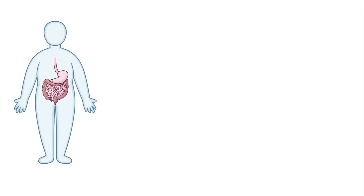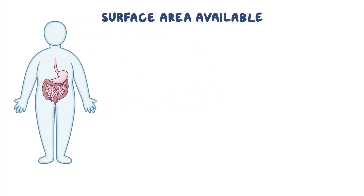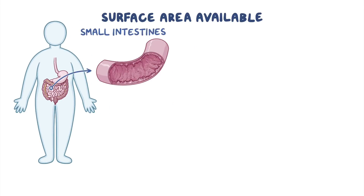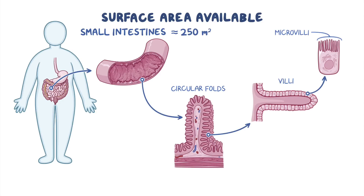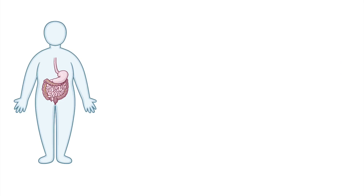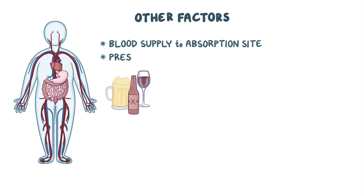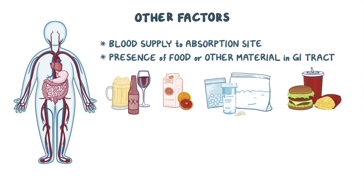Another factor influencing absorption is the surface area available. A good place for absorption is the small intestine. With its circular folds, villi, and microvilli, the total surface is actually about 250 square meters, the size of a tennis court. Other factors also include the blood supply to the absorption site and the presence of food or other material in the gastrointestinal tract that can either promote or inhibit absorption.